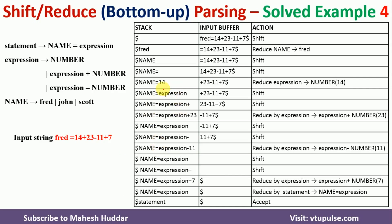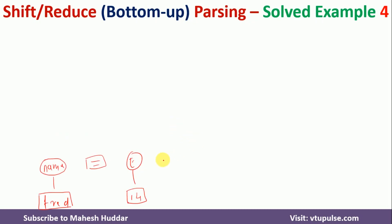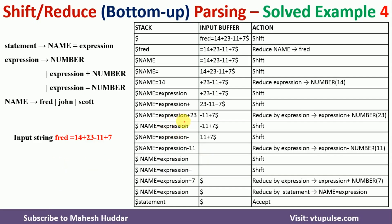Then plus was shifted and 23 was shifted. Expression plus 23 — all three — were reduced to expression. So we add a plus node and a 23 terminal node, with a new expression non-terminal node above all three.